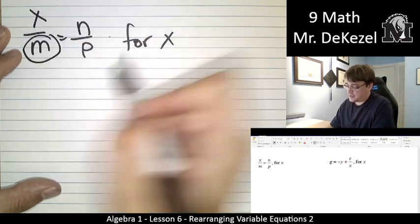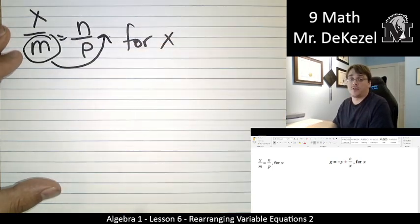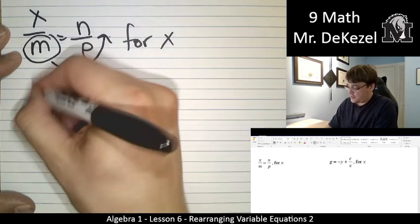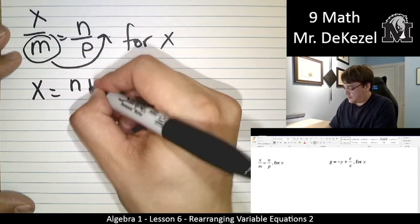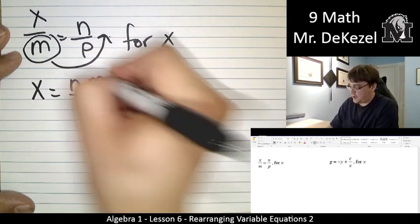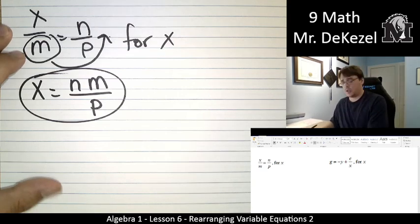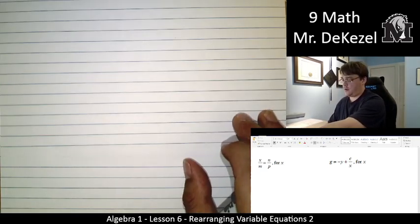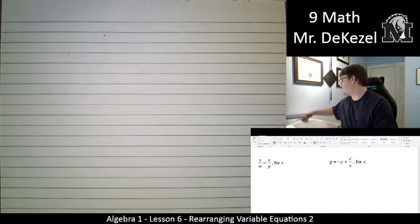Since it's on the bottom, this is dividing. We move it across the equal sign, it's going to be multiplied. So x is equal to n times m divided by p. And that's too many letters too close together in the alphabet. OK, let's do another one.